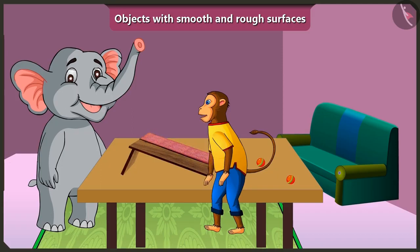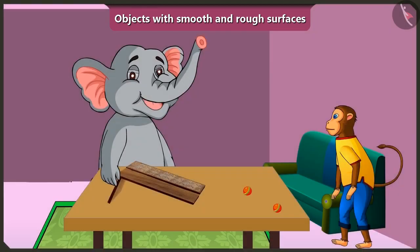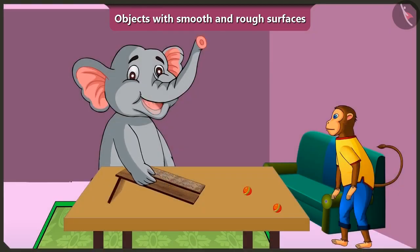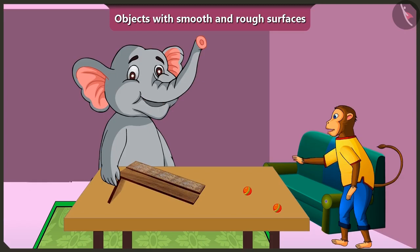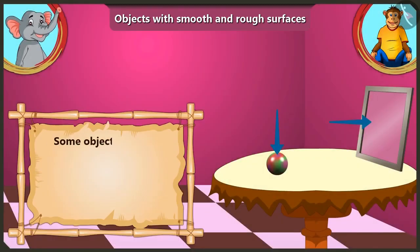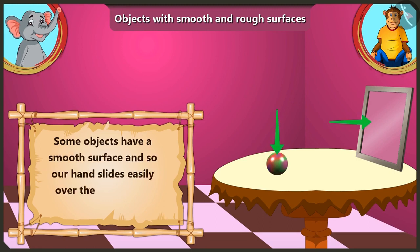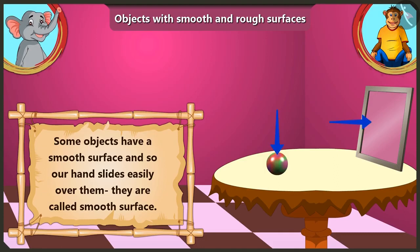Come, touch it and feel it. My hand is sliding on this — its surface is very smooth. Yes Appu, the surface of few things are smooth, so our hand easily slides on them. This is called a smooth surface.